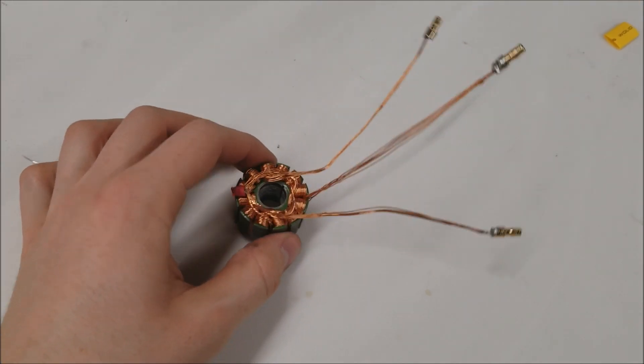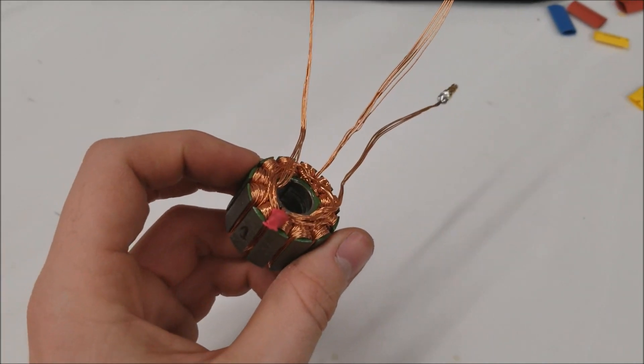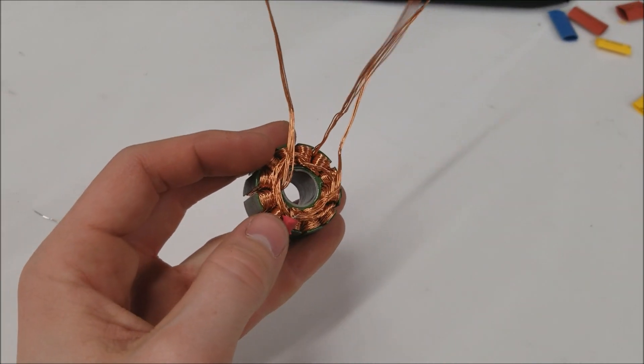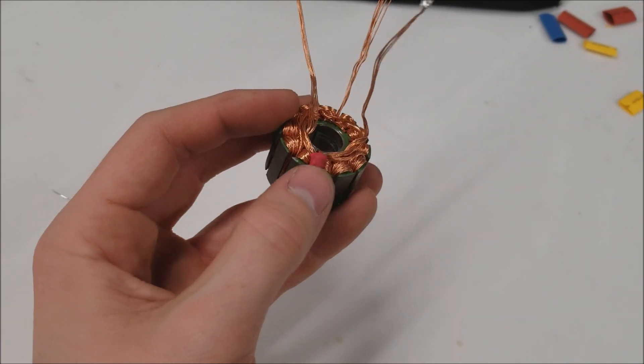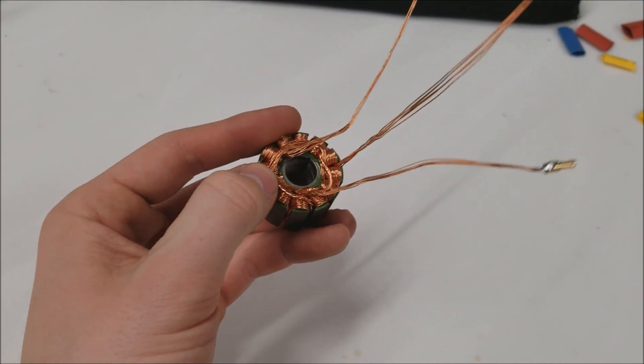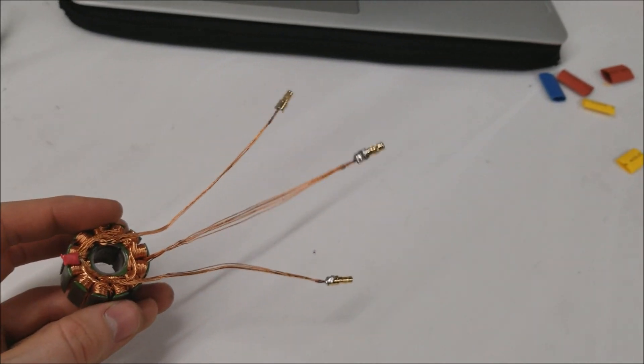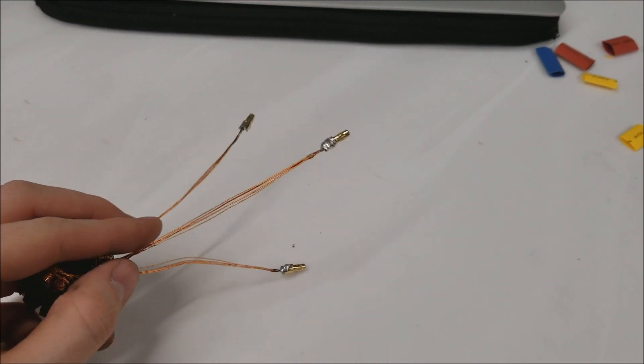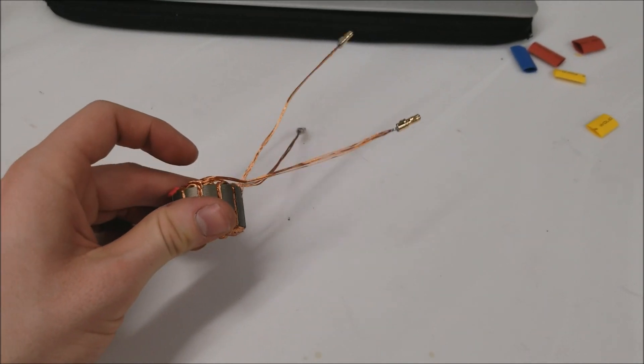Now I have finished the Y termination. You can see the phase ends all are joined here, and I heat shrunk this so that I wouldn't short with anything else. And then my three other ends of the phases just come out with bullet connectors that I'll use to connect to my ESC. Let's test it out.